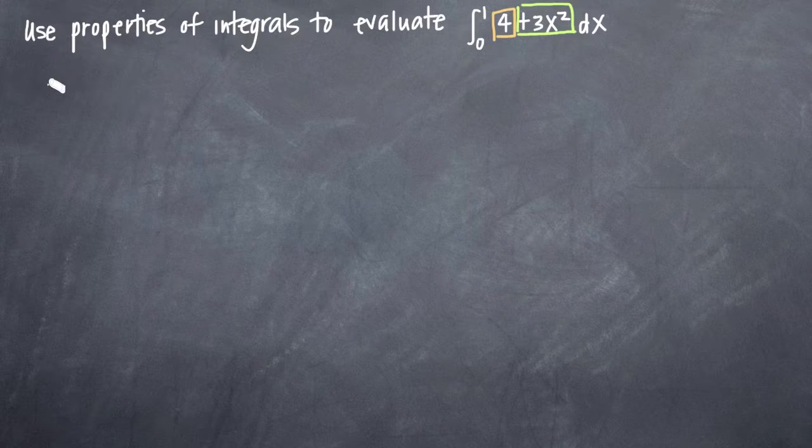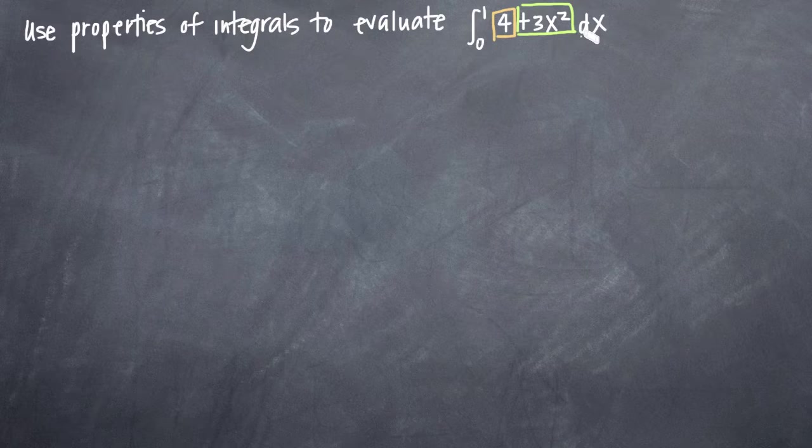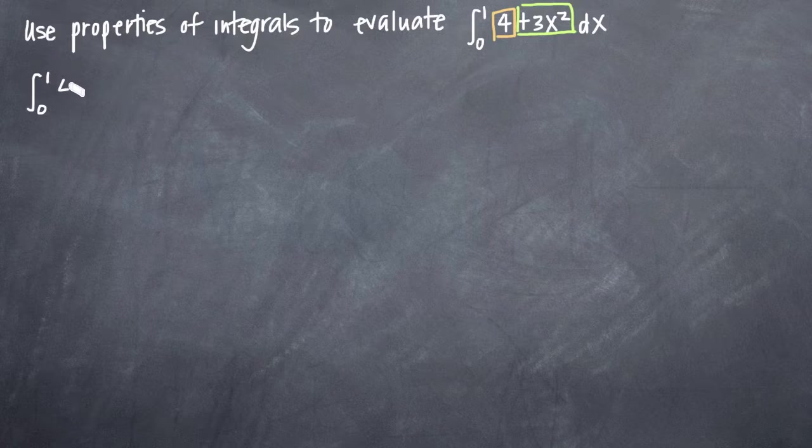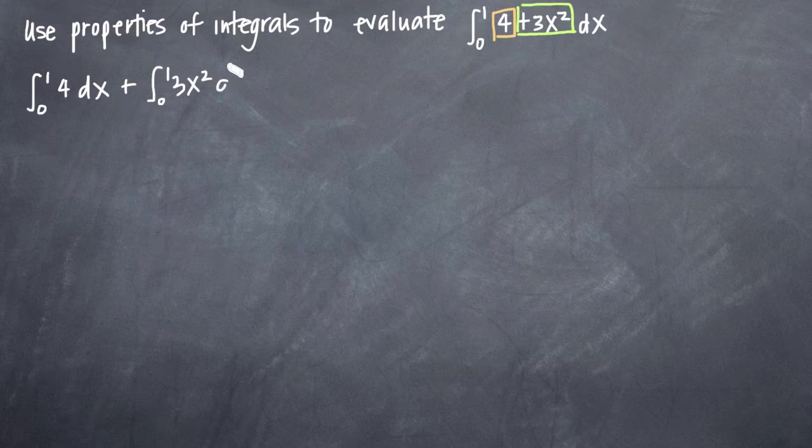we can split them apart into two separate integrals. So the integral from 0 to 1 of 4 plus 3x squared dx is the same thing as the integral from 0 to 1 of 4 dx plus the integral from